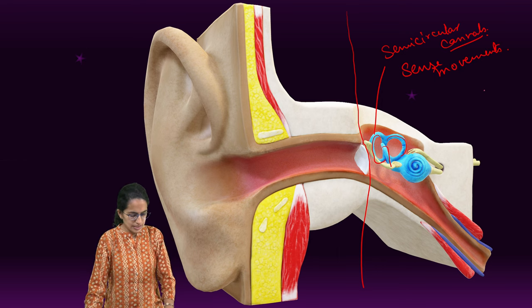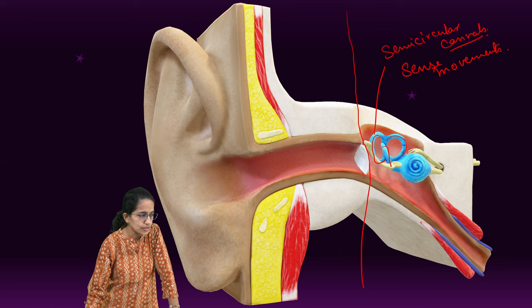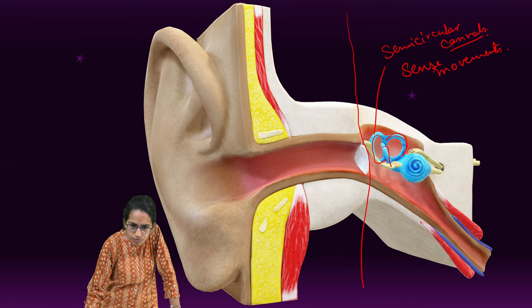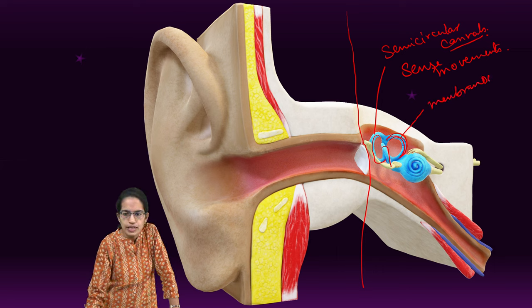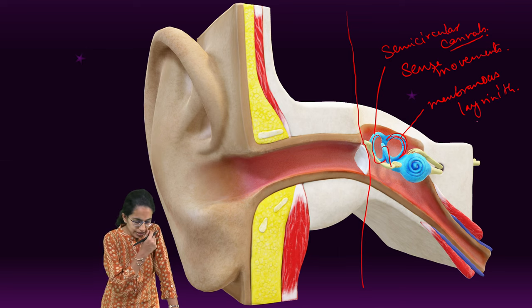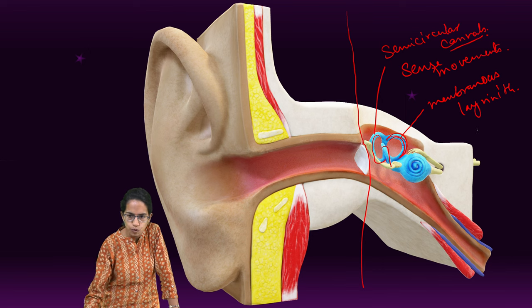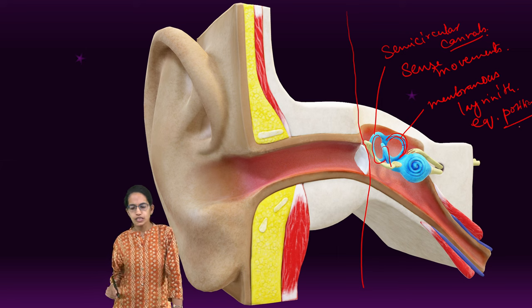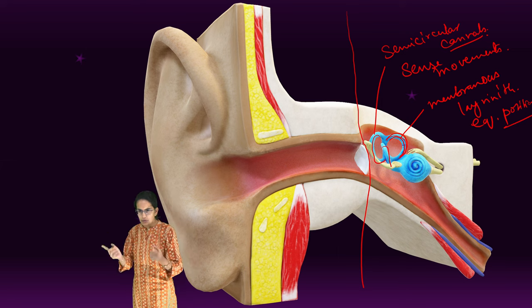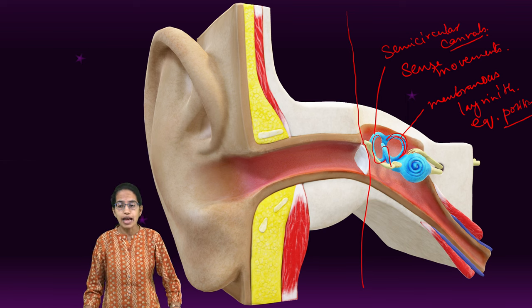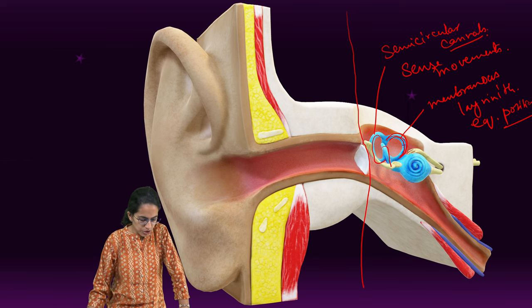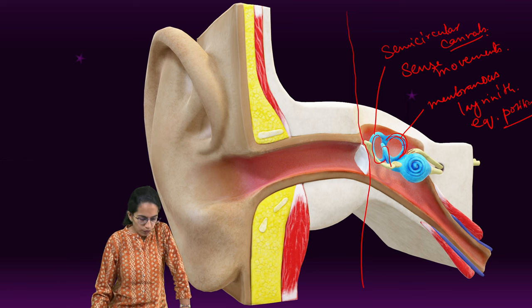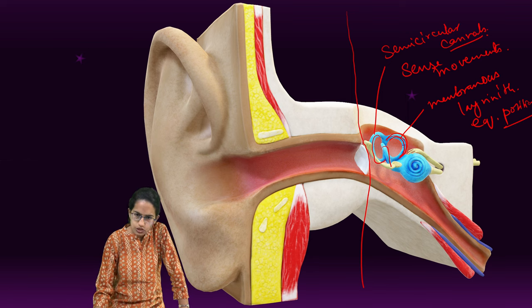Within this semi-circular canal, the blue ring that you can see is what is known as the membranous labyrinth. This membranous labyrinth is filled with fluid and helps you to maintain equilibrium position. The function of this membranous labyrinth is to provide an equilibrium position, and it is also one of the important organs used for hearing.